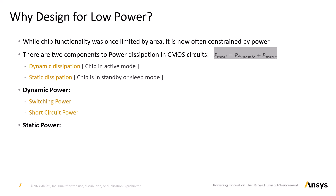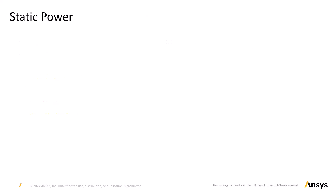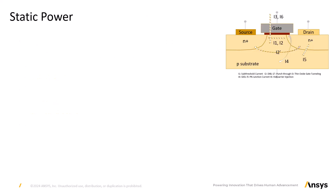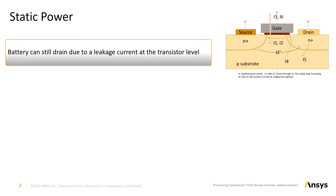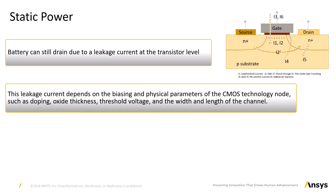Year after year, the static power dissipation — which should have been close to zero — keeps increasing and is becoming equal to the dynamic power dissipation. Did you know that even when your gadget is not in use, its battery can still drain due to leakage current at the transistor level? This leakage current depends on the biasing and physical parameters of the CMOS technology node, such as doping, oxide thickness, threshold voltage, and the width and length of the channel.